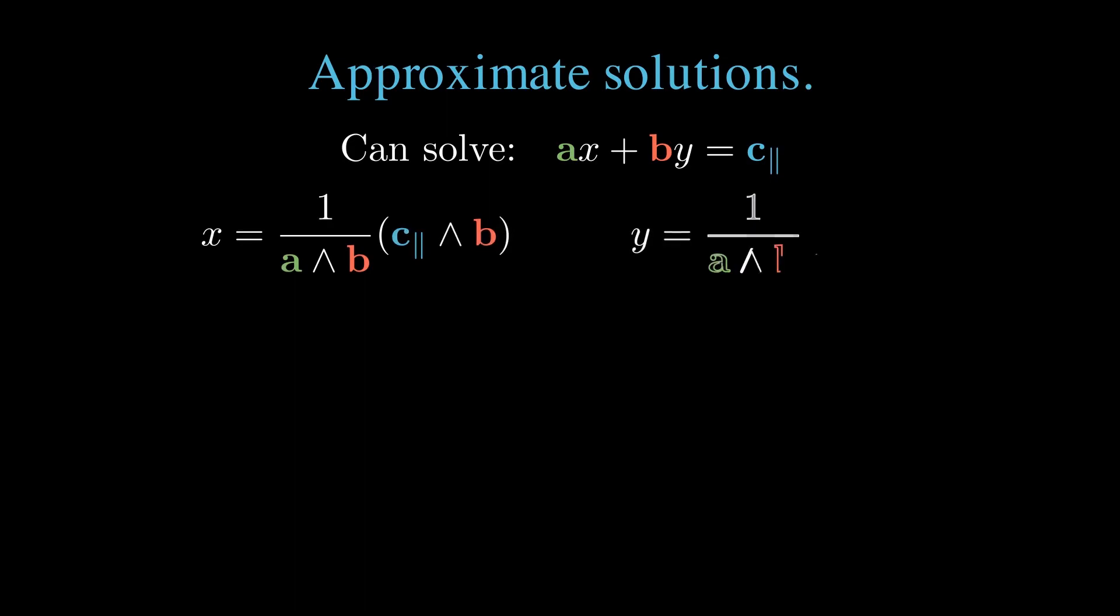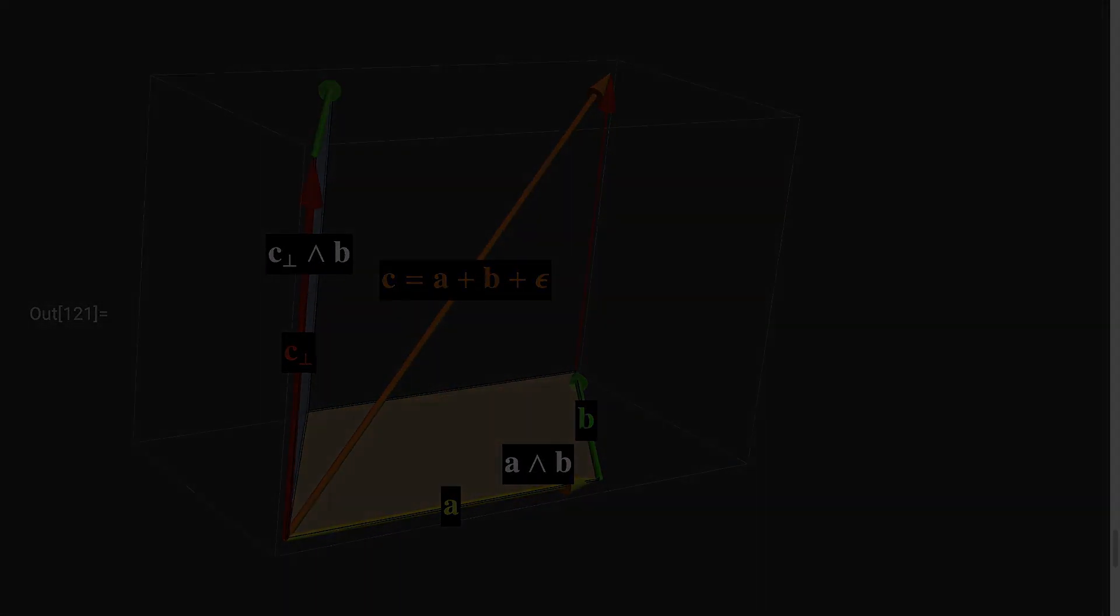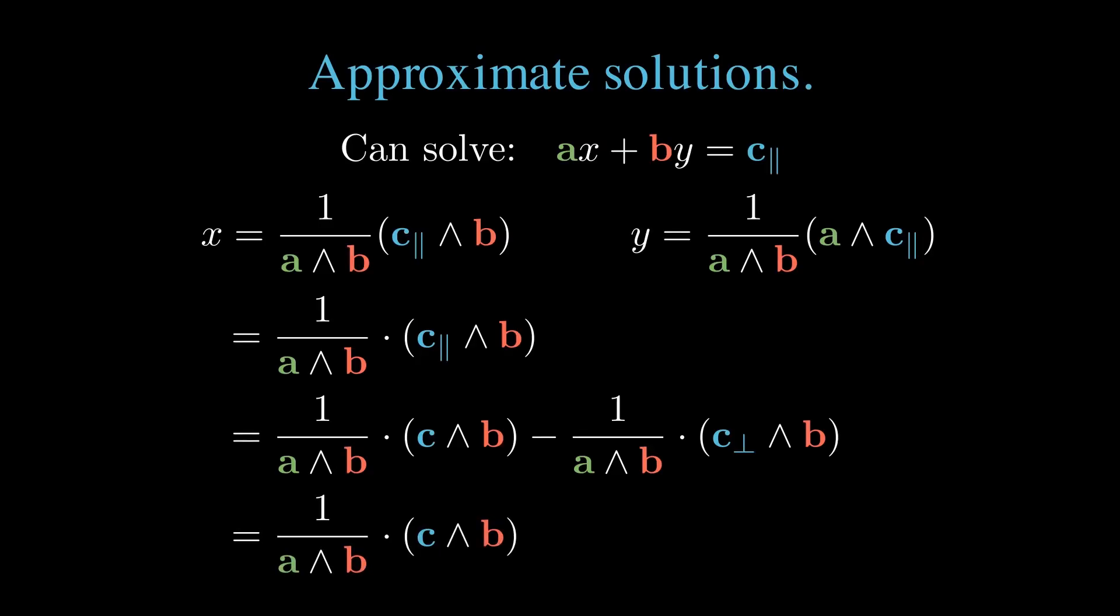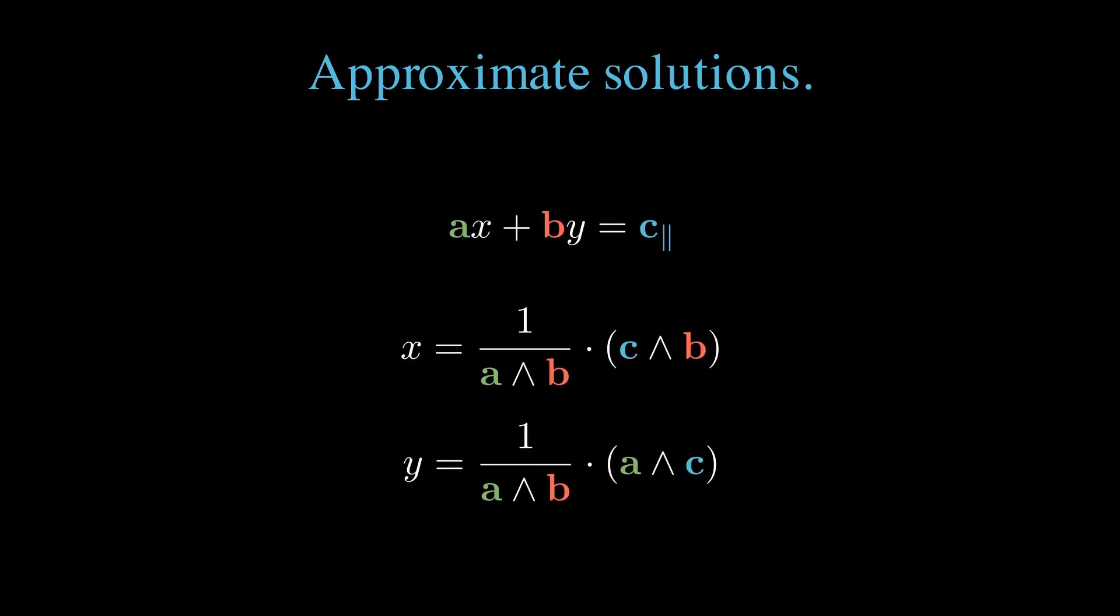We immediately write the solutions for x and y. We can reduce either of these in a nice way, eliminating the c parallel in favour of c. Because these bivectors are scalar multiples of each other, introducing a dot product does not change the result. Now we can write out c parallel as c minus c perp, and distribute. This second multivector product is zero because it's proportional to the cosine of the angle between the two bivectors, which are at 90 degrees. That leaves us with x equals one over a wedge b dotted with c wedge b. Similarly, y is one over a wedge b dotted with a wedge c. We found a compact geometric algebra representation for the solution of a two variable problem of best geometric fit.